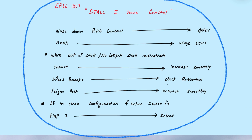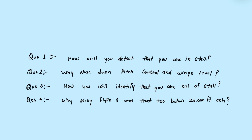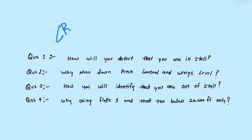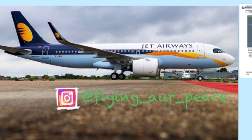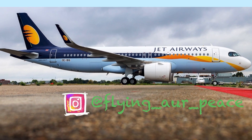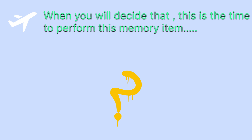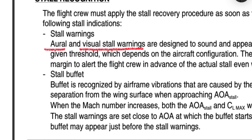In this video I will try to explain this memory item, clear all your doubts, and cover all the cross questions. Let's start with the very first question that comes into my mind: when will you decide that this is the time to perform this memory item — stall and recovery? There are three indications. Number one, you have a stall oral warning.